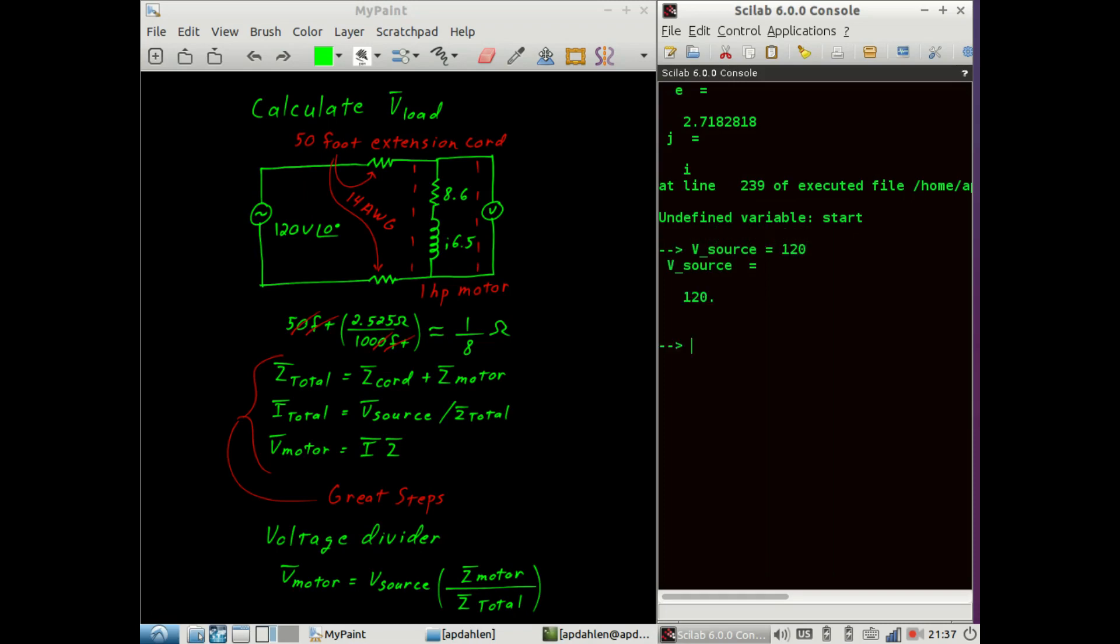The source voltage is 120 volts. The impedance of the extension cord is 1 eighth of an ohm, but be careful, there are two wires in that extension cord. There's the wire going out and there's the wire coming back. Make sure you get them both. So the impedance of the cord is actually 2 times 1 eighth ohms. The motor is a complex impedance. It's 8.6 plus j 6.5 ohms.